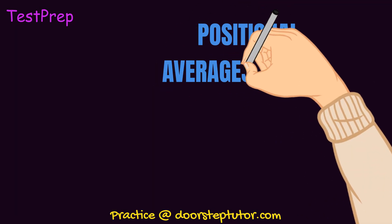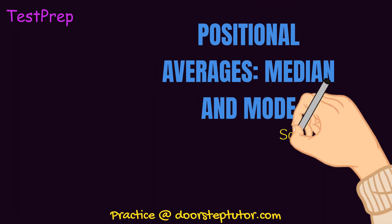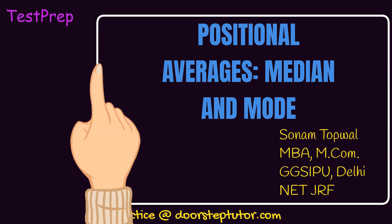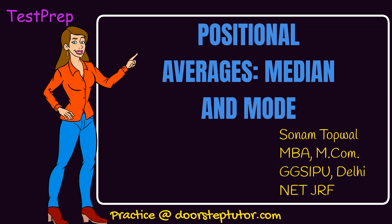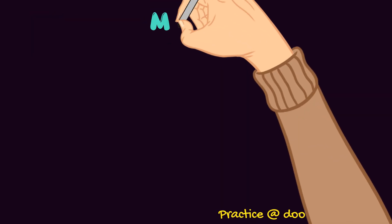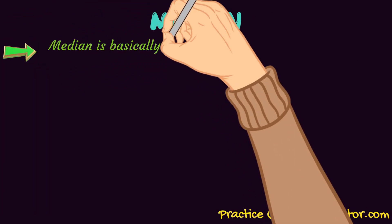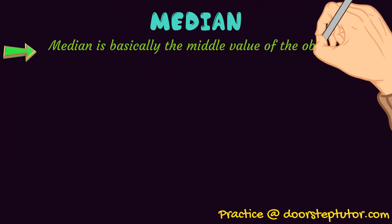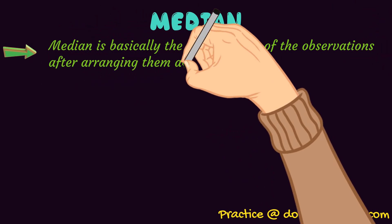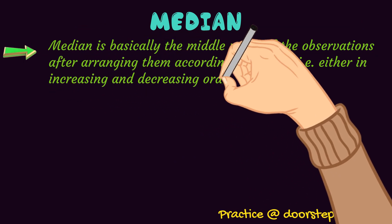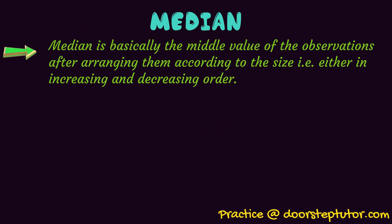Hi everyone, today we are going to discuss the positional averages of the measures of central tendency, that is the median and mode in detail. Median is basically the middle value of the observations after arranging them according to their size, either in increasing or decreasing order. So remember, median is the middle value of all the observations that we have.